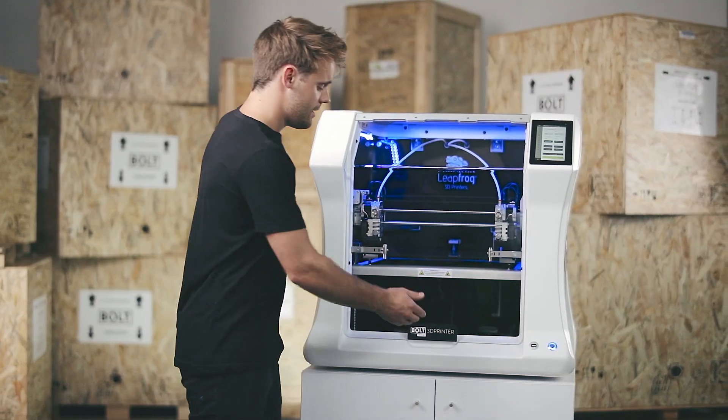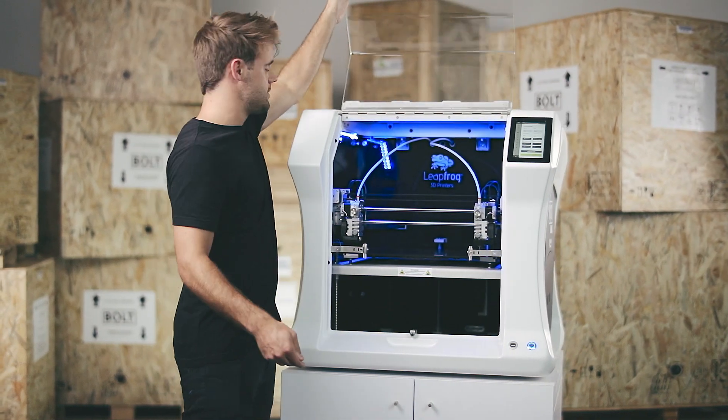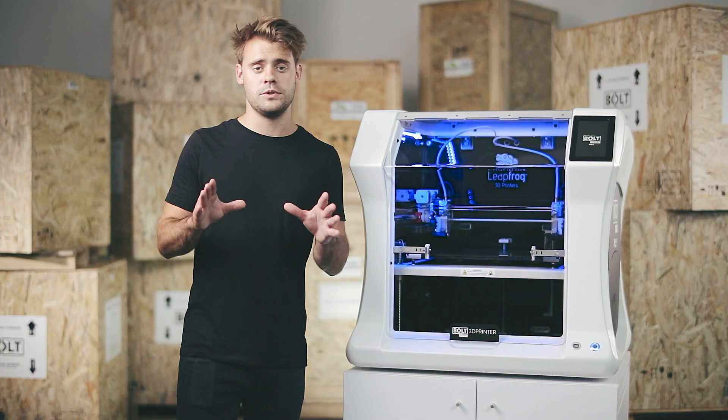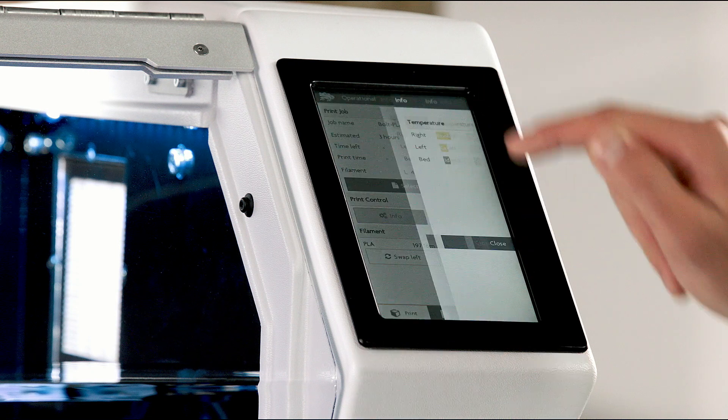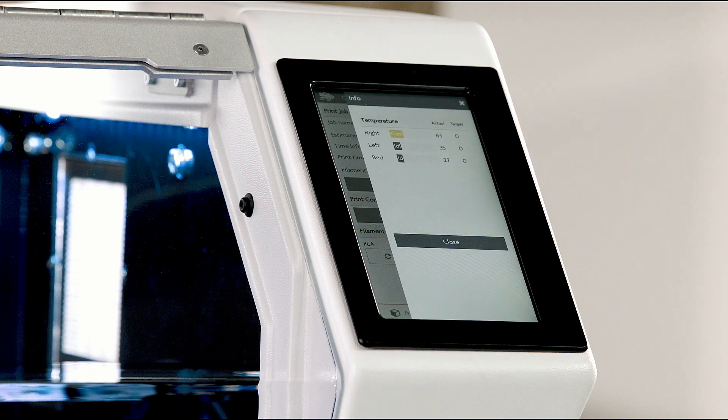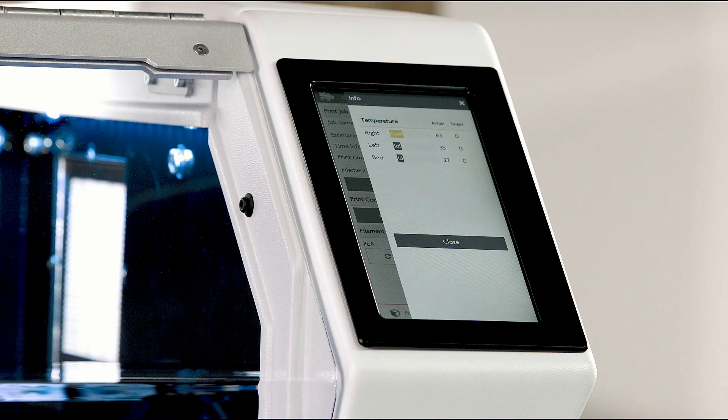The Bolt Pro is now ready to swap hotends so I need to disconnect the current ones and install the new ones. To do so I have to check the actual temperature of the hotends first. Go to the print tab and select info. Proceed when the temperature of your hotend is lower than 30 degrees Celsius.